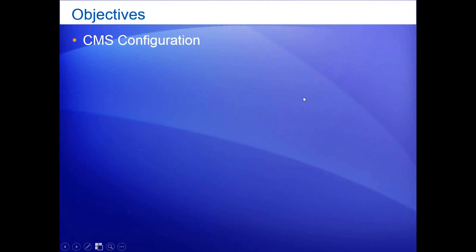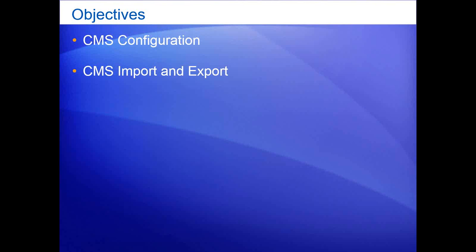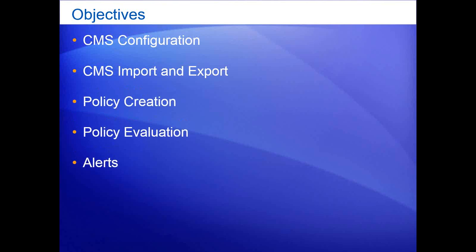Jumping into things here - here's what we're going to look at today. We'll start with central management server: how to find it, and then importing and exporting. Some of you may use registered servers now in Management Studio, and you're definitely going to want to know about importing and exporting so you don't have to recreate things if you decide to use a CMS. From there we'll look at policy-based management - how to create them, how to evaluate them against servers in your environment, how to set up alerts, and a bit on reporting using open source projects.